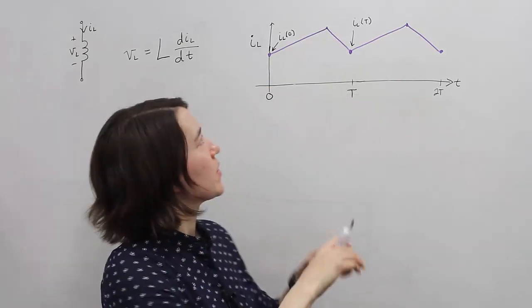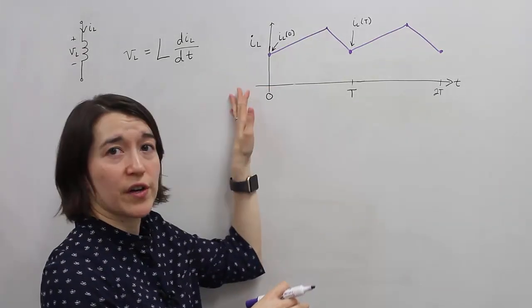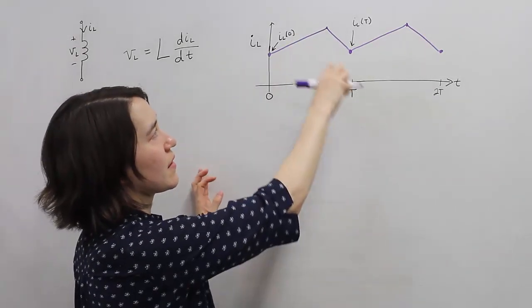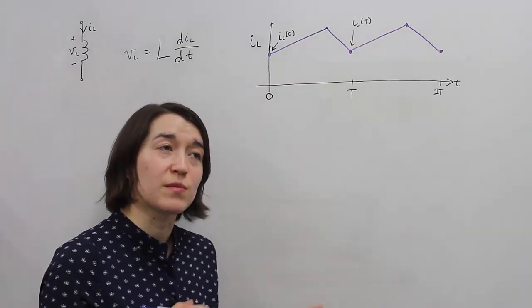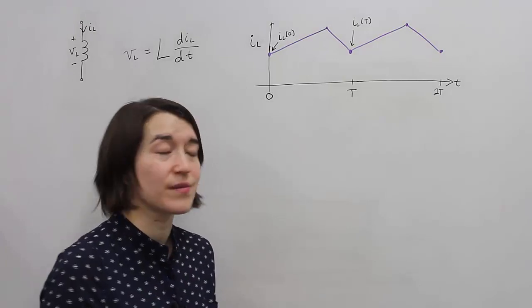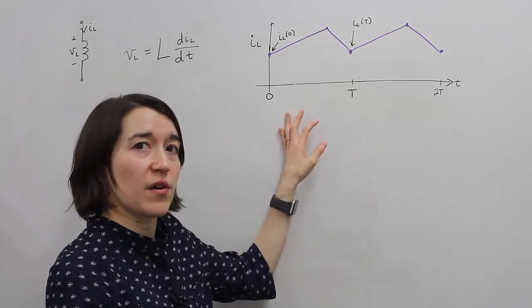I drew a picture of the inductor current, and we did this kind of triangle wave, which is a really common waveform you see in switch mode DC-DC converters. So we're going to use this as our example.